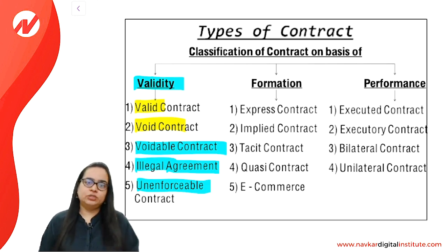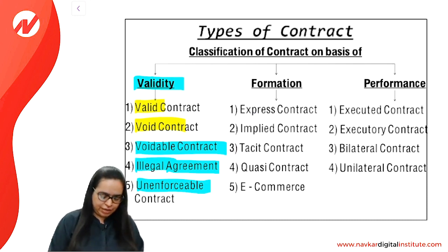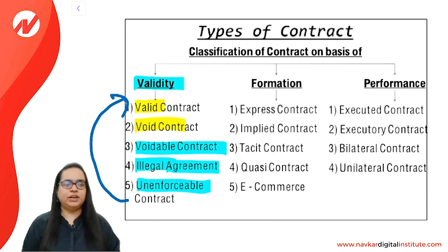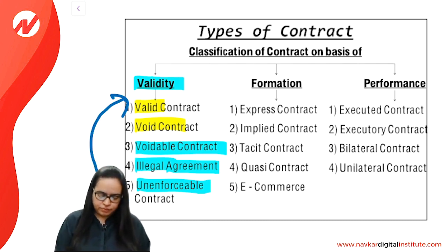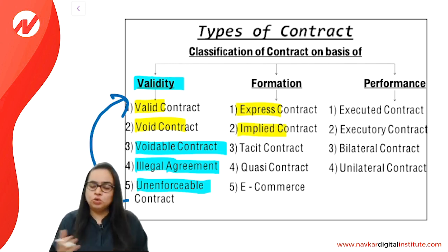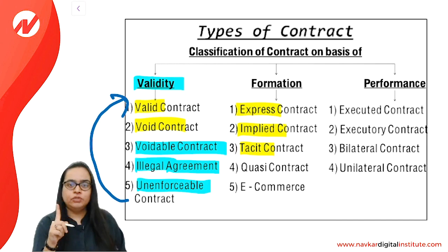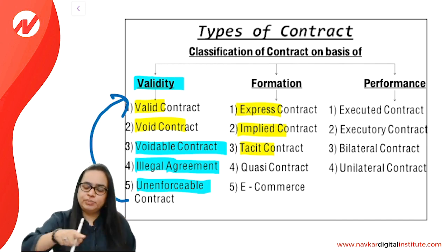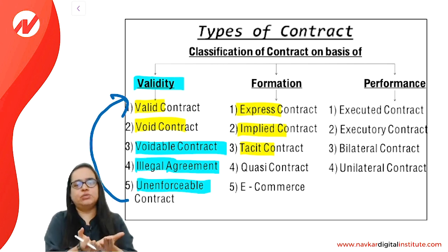Unenforceable — if you rectify the minor error, the contract becomes valid. Formation types: Express is created by words — oral or written. Implied is created by behavior — nothing was said but actions created a contract. And remember 'tacit' — tacit is like expressed or implied, but the difference is that the mechanical process is fixed and remains the same. A contract where the mechanical process is fixed and remains the same is called a tacit contract.